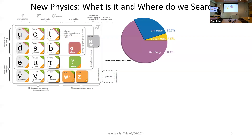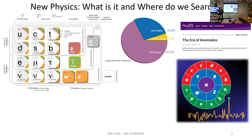Everything we can describe using our standard model accounts for only about five percent of the energy budget of our universe. If we take our astrophysical probes and point them wherever we look, we see an energy budget distributed like this pie graph, and the things we call ordinary matter—the particles of our standard model—represent only five percent. Ninety-five percent is not described by this very successful model. We've entered an era of anomalies where precision measurements have gotten so good that we're starting to see potential hints of new physics—but those hints have also shown us that there may be something within our measurements we don't fully understand.